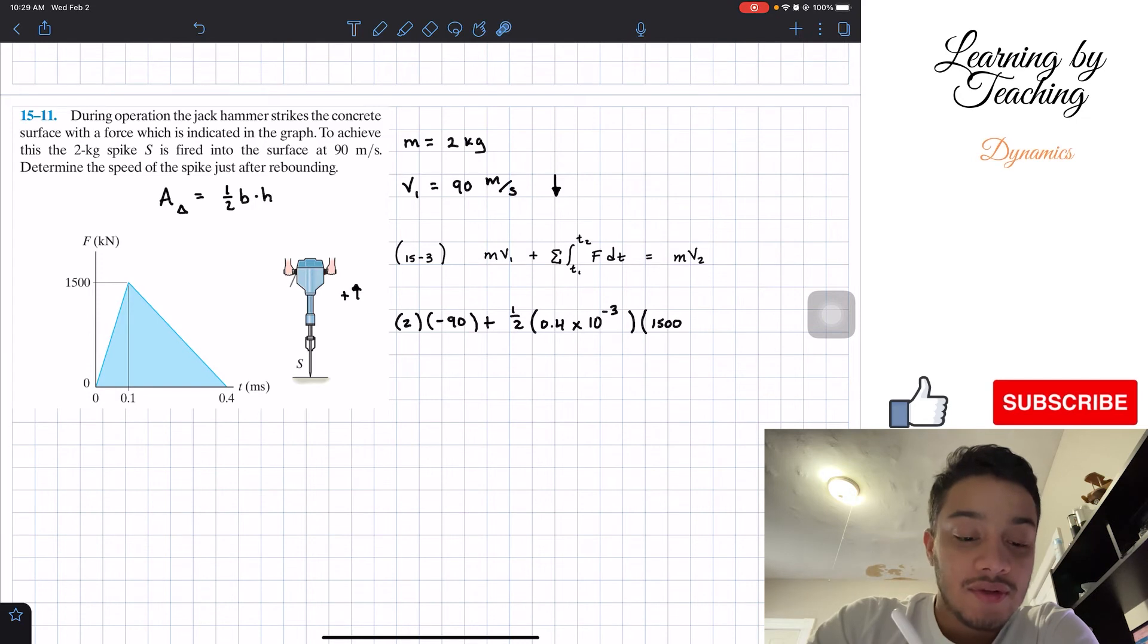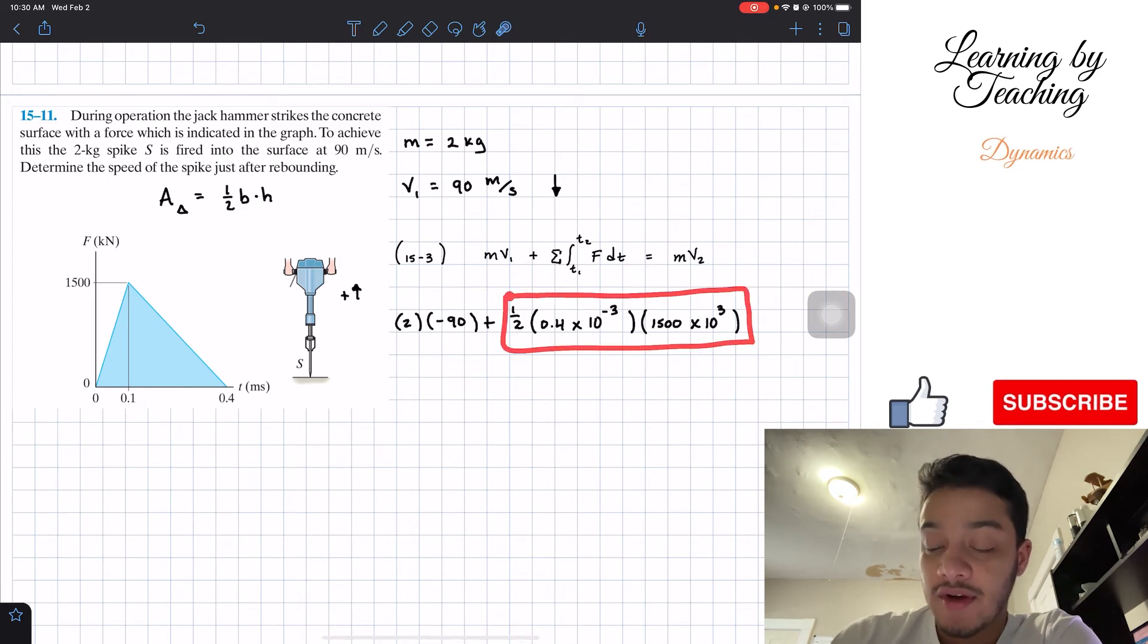So we multiply by 1500. And again, the units play a role in here. This is kilonewtons, I'm going to convert it to regular newtons. So this will be multiplied by 10 to the positive 3 in this case. So this is basically the area of this triangle, which will be equal to our impulse in our equation.